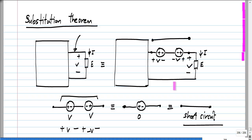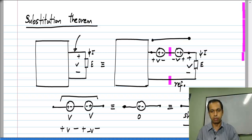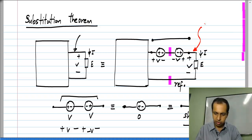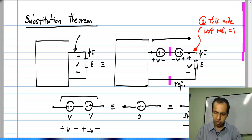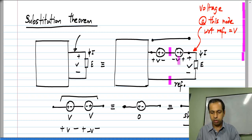Now let us consider the voltages at this node and that node. We can take any reference we want, but for simplicity let me take this node itself as the reference. With respect to this reference, the voltage at this node — I will show that in red — is V. From here to there you have a potential rise of V, and from there to there you have a potential fall of V.